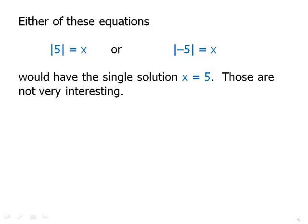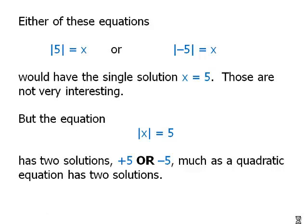Those are not very interesting equations — there are no variables inside the absolute value. It gets more interesting when we put variables inside. The absolute value of x equals five has two solutions: positive five or negative five. x could be either value. This is similar to how a quadratic equation has two solutions — another category of algebra equations that can have two solutions.